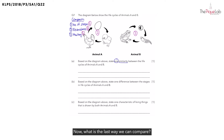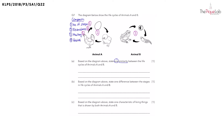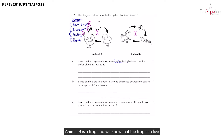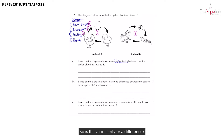What is the last way we can compare? We can also compare based on the habitat, or where the animals live. When we look at animal A, does the animal live on land or in water? Animal A lives on land. But what about animal B? Animal B is a frog and we know that the frog can live both on land and in water. So is this a similarity or a difference? This will be a difference between them.